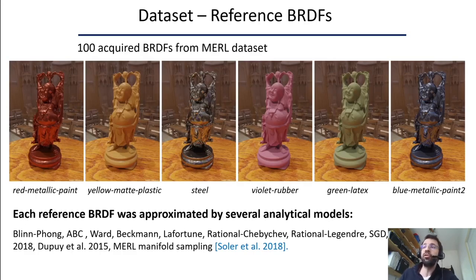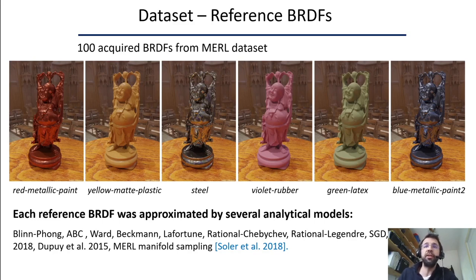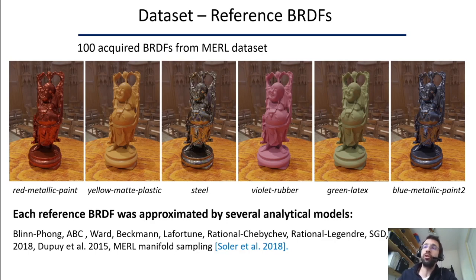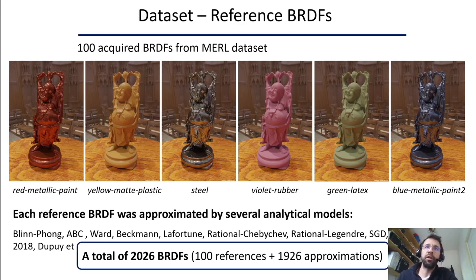To create our dataset, we first selected reference BRDFs corresponding to real measured BRDFs. We took 100 BRDFs from the MERL dataset. Each reference BRDF was then approximated by several analytical models: BRDF, ABC, Ward, Beckmann, LaFortune, several polynomials including Chebyshev and Legendre, HDD, GGX, and the recent tabulated models from Baguer et al. and Dupuis et al. We also considered what we call male manifold samples, computed using the recent algorithm from Soler et al. In total, we gathered 2,026 BRDFs, including 100 references.